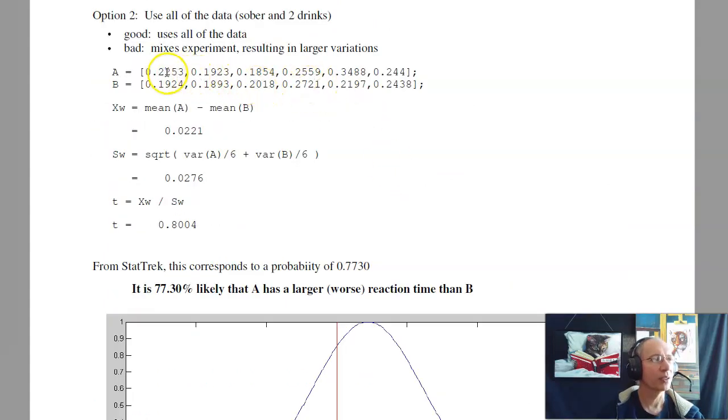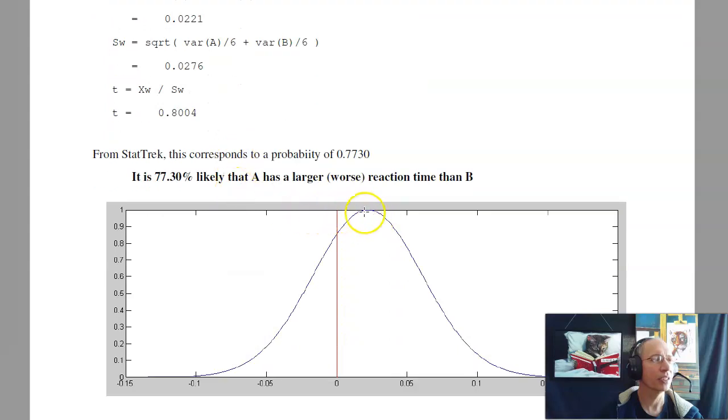The second way is use all the data. I'll use the sober A and A after taking two drinks, sober B, B after two drinks. The good thing about that is I have more data. More data helps reduce the standard deviation. The bad thing is I'm mixing the experiments. I'm not having a consistent experiment. Sometimes it's before drinks, sometimes after two drinks. That inconsistency will cause an increase in variation. So try it either way. If I take the difference, create a new variable W that's the difference in the two. The mean of W, the standard deviation of W. Now I'm divided by six because I have twice as much data. The t-score is the distance from the mean to zero in terms of standard deviations. Then StatTrek will convert, or t-table will convert the t-score to a probability. So using this approach, the area to the right is 77%. I'm now 77% certain that A has a reaction time worse than B's.